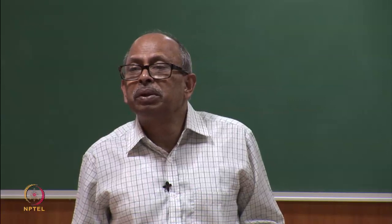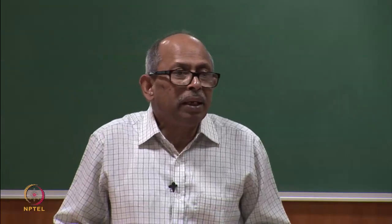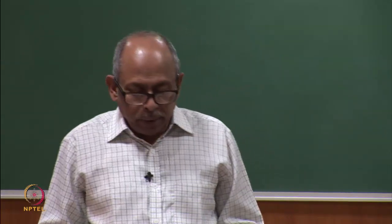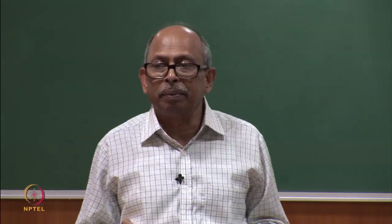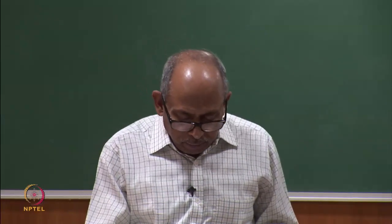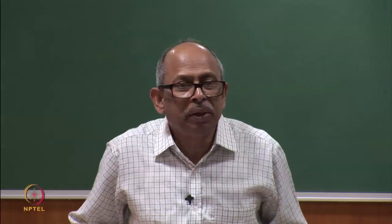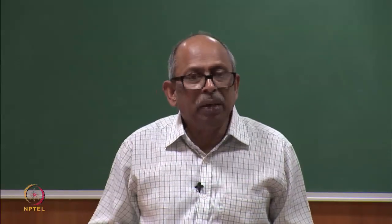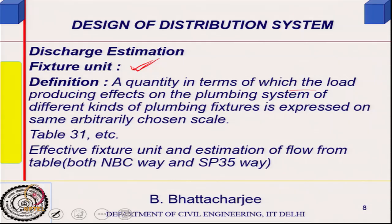The second issue is that frequency of use is also different — a kitchen tap might be used more often than a shower. Therefore, a new unit called the fixture unit is devised to make everything uniform in some manner. The fixture unit is a quantity in terms of which the load-producing effects of different kinds of plumbing fixtures are expressed on an arbitrary scale.